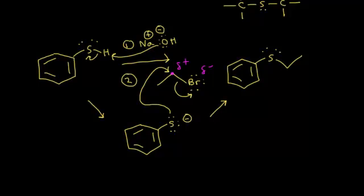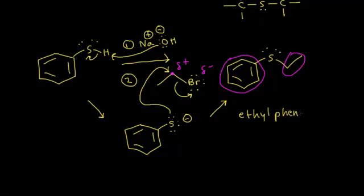Now if I were to name this sulfide, it's a lot like naming ethers. I could use the common way, treating both sides as alkyl groups. On the right, this would be an ethyl group. On the left side, this is a phenyl group. Following the alphabet rule — E before P — I say ethyl, then phenyl, then sulfide. So ethyl phenyl sulfide is the sulfide produced in this analog of the Williamson ether synthesis.